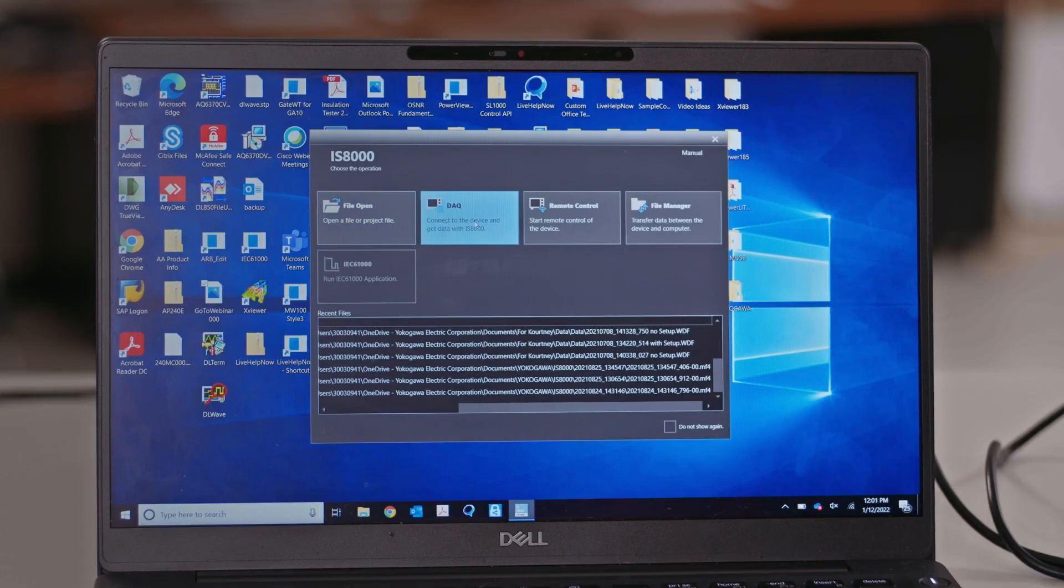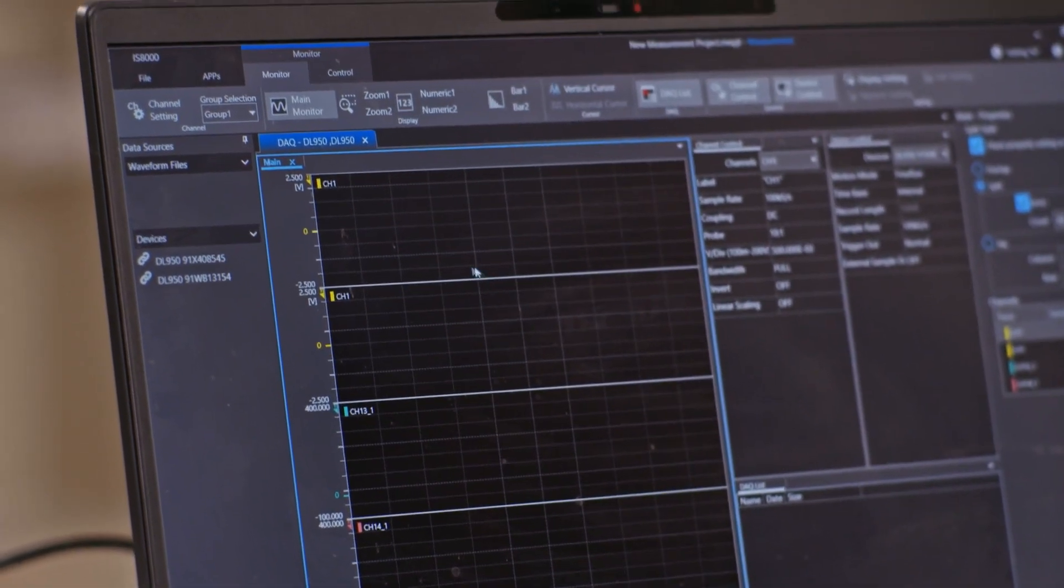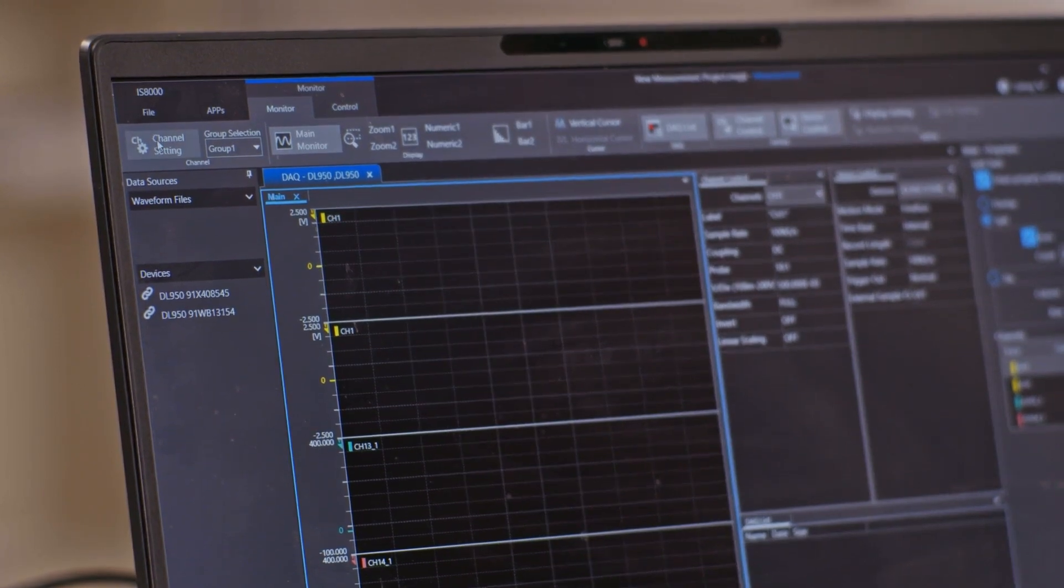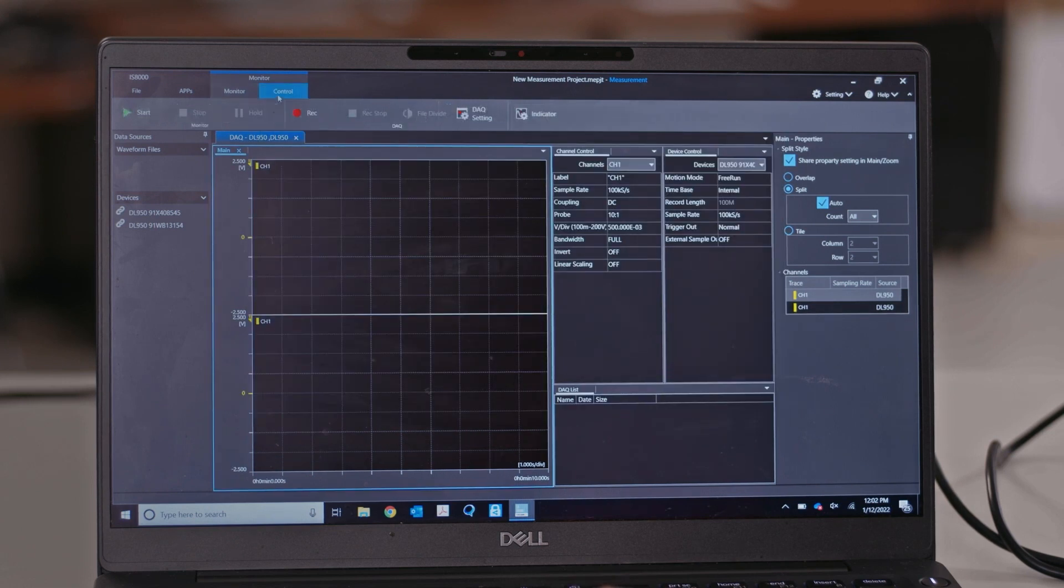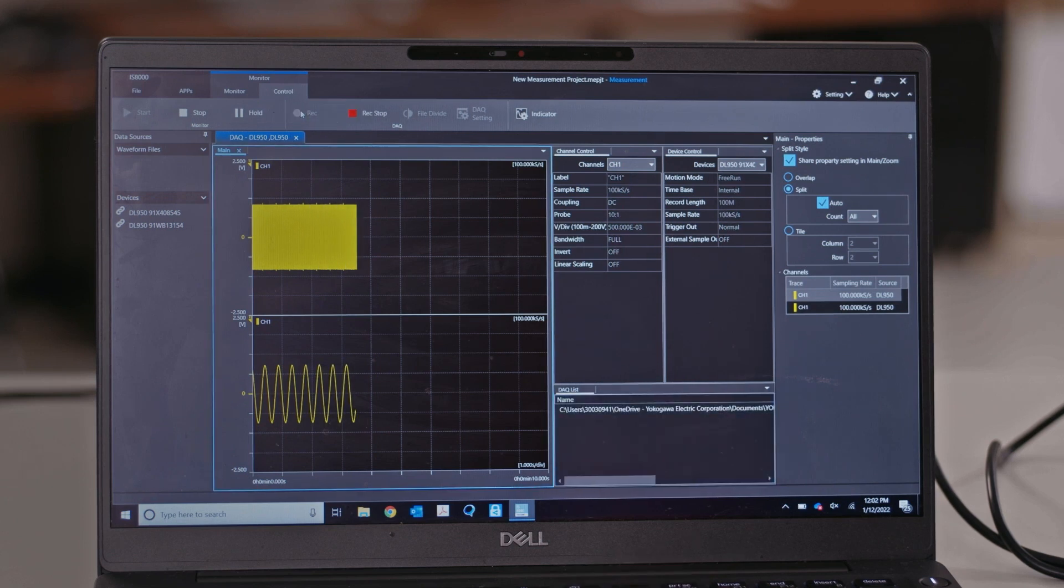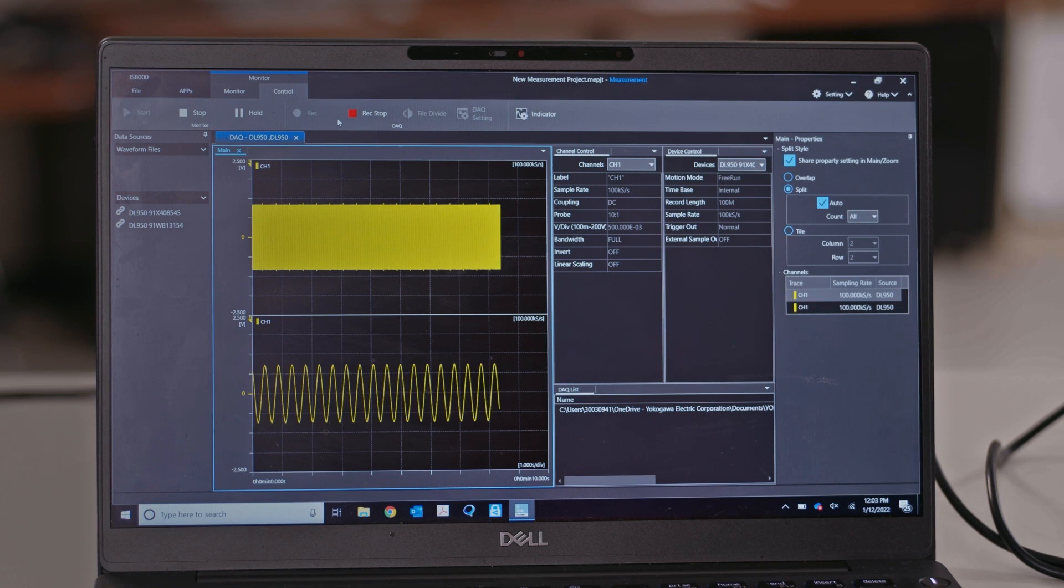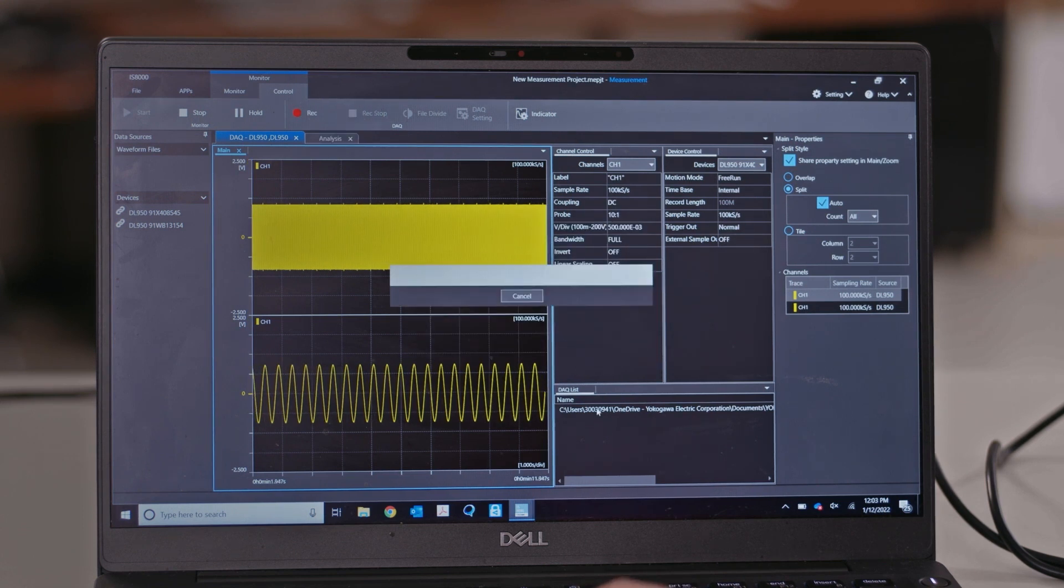In DAC mode, all the channels from all the DL950s are displayed on one time base. Click on the channel settings to add and remove channels you want to record. Once the settings are configured, press Start and Record. When data collection is stopped, the data is automatically saved to a specified folder on your PC that can be opened for analysis at any time.